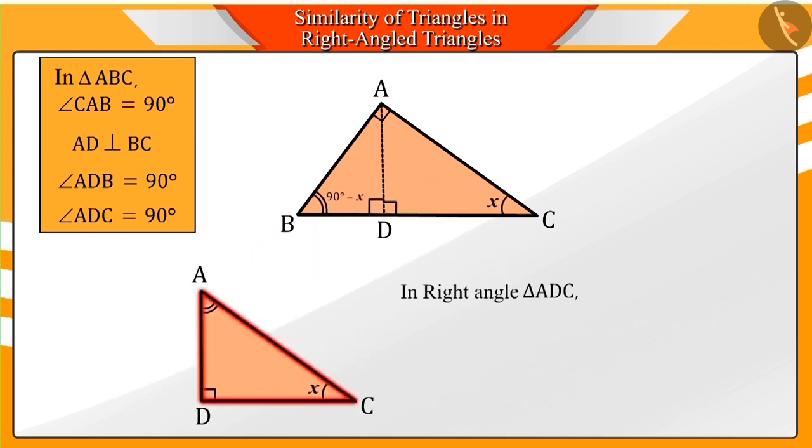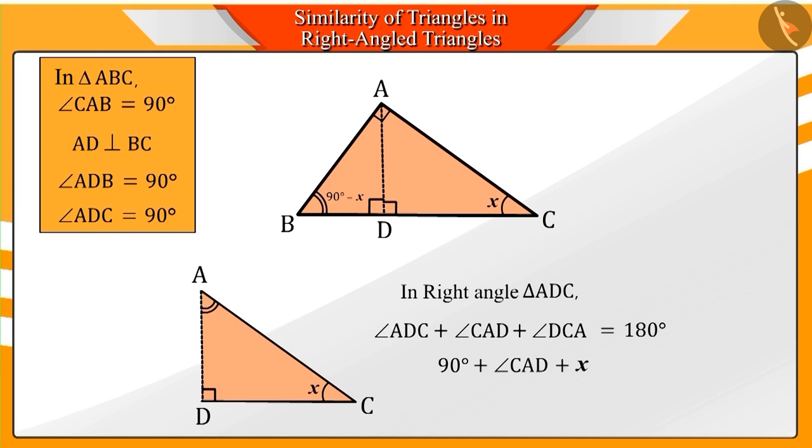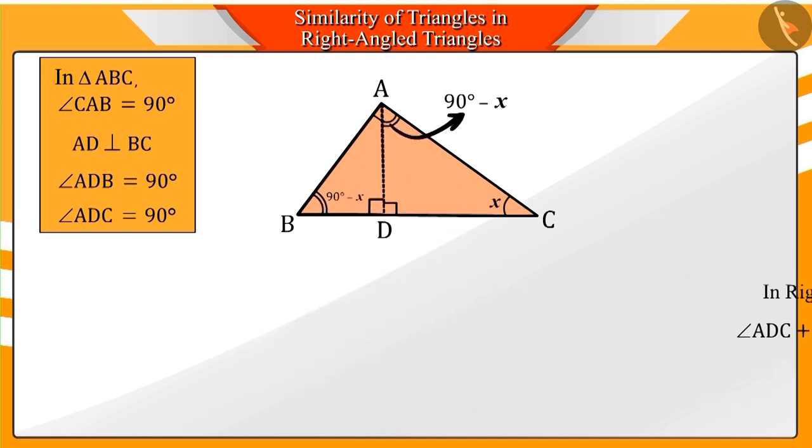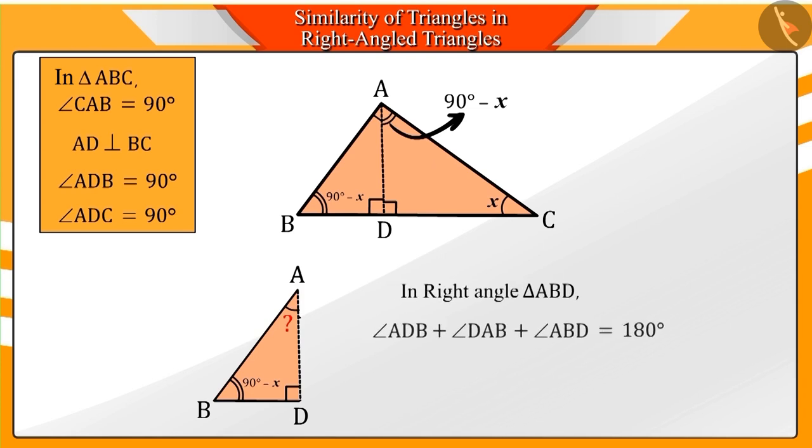Similarly, the measurement of angle CAD in triangle ADC will also be 90 minus X. Similarly, can you tell the measurement of angle DAB in triangle ABD? Well done! The measurement of angle DAB will be X.